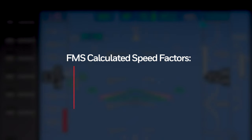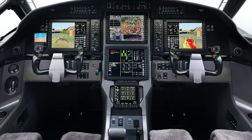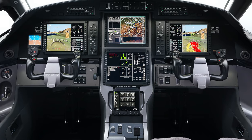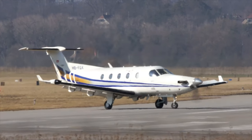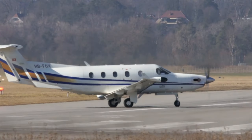The FMS calculated speed takes into account many factors, including the phase of flight, aircraft configuration, altitude, and distance from departure and destination airports. Before using the FMS speed mode, it's important you have an understanding of how the mode functions, so let's look at a typical flight to see how the FMS speed mode works.